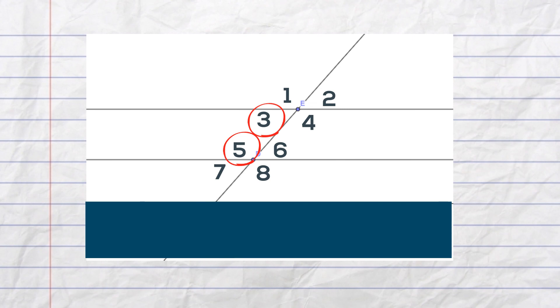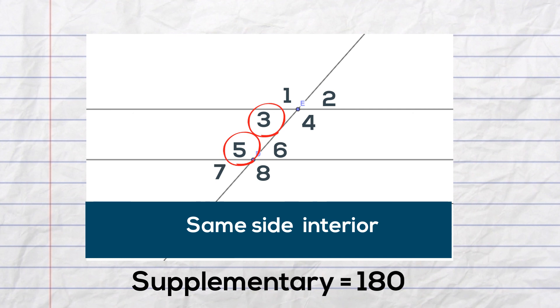How about this pair of angles? They are same side interior and they are supplementary, which means their angle measures add to 180 degrees.